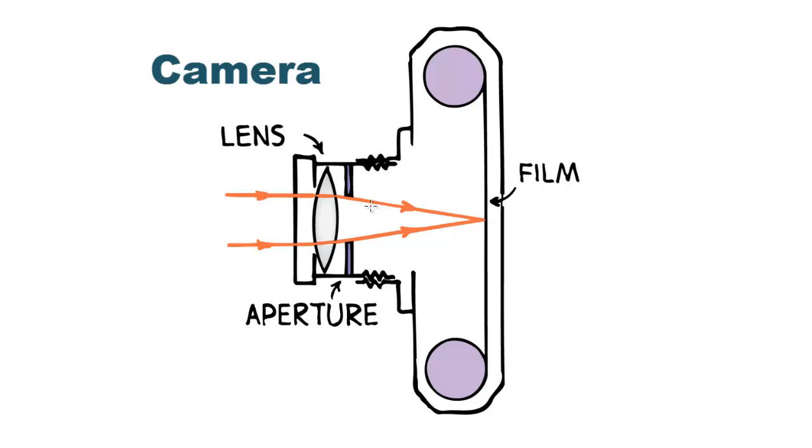How much light is let into the camera is controlled by the aperture. The aperture is adjustable and can be widened or narrowed to control the light input. Very simple device.